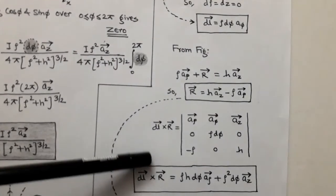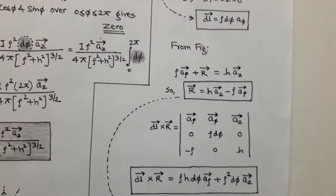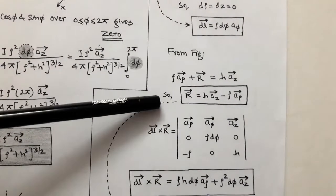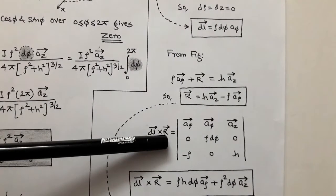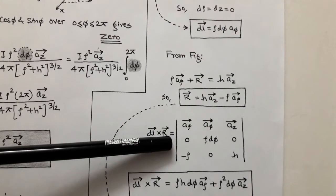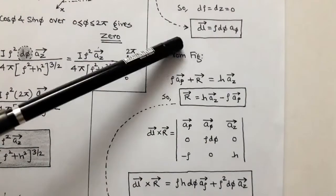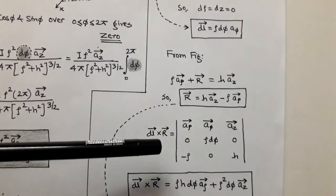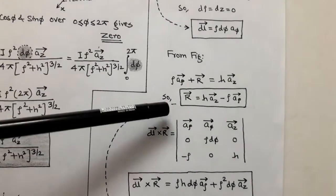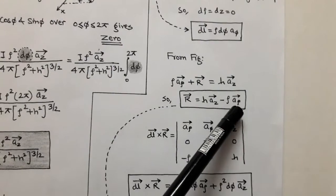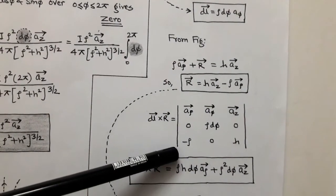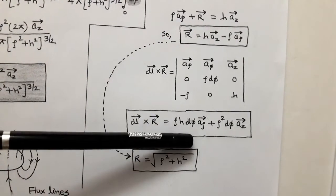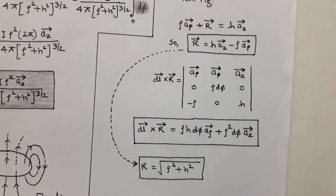Now we determine the cross product of dl vector and r vector using a matrix. The first row contains unit vectors â_ρ, â_φ, â_z. The second row has the components of dl vector: the φ-component is ρ dφ, while the ρ and z components are 0. The third row has the components of r: ρ-component is −ρ and z-component is h. After taking the cross product, we get: ρh dφ â_ρ + ρ² dφ â_z. The magnitude of r vector is √(ρ² + h²).